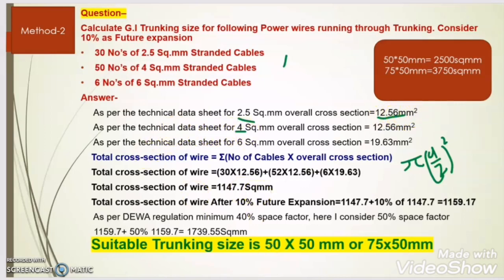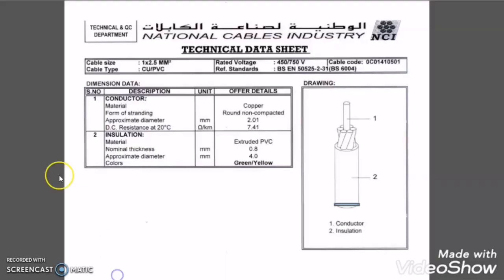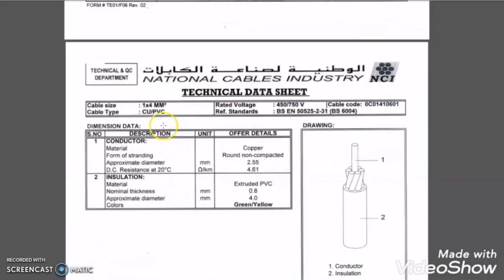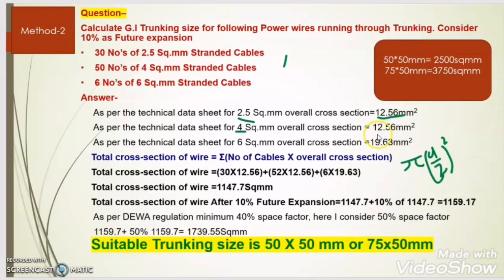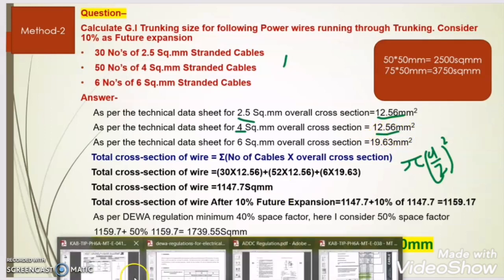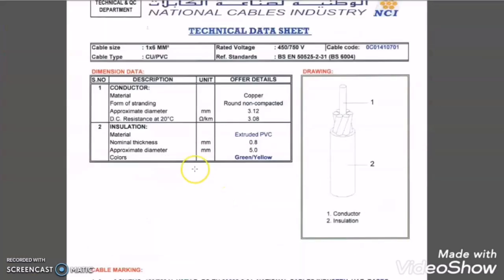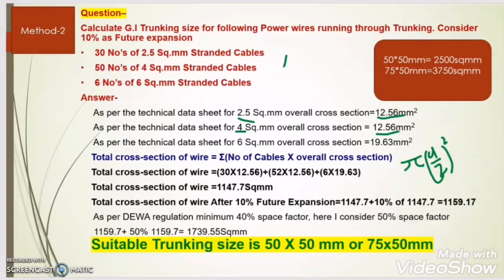For the 4mm wire, the overall diameter is also 4mm, so the cross section area is also 12.56 sq mm. For the single-core 6mm wire, the overall diameter is 5mm. Using the same formula, the cross section area comes to 19.63 sq mm.